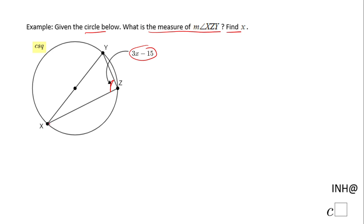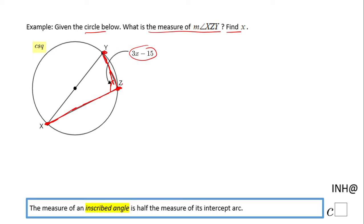XZY, which is this angle, is what we call an inscribed angle. We notice the vertex of the angle is right here, and the other two points that belong to the sides of this angle, X and Y, are on the circle. An inscribed angle is half the measure of its intercept arc.